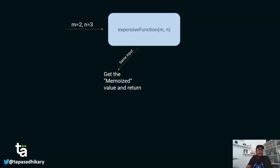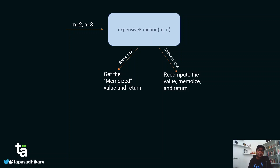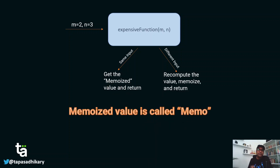For the same input — like m equals 2 and n equals 3 — if this particular function is going to produce the same output, instead of computing it every time we return the computed value from cache to the caller. This reduces a lot of computation power required for this function to execute. But if the input changes, you have to compute again, store it into the cache, and then return the cached value.